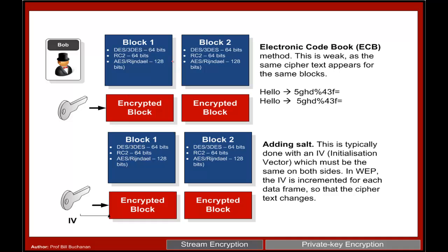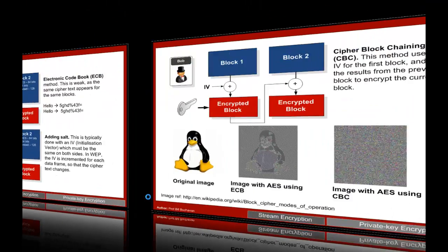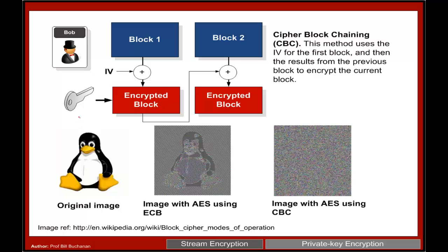In a standard electronic code book, we then encrypt each block with the key. The problem with that is that each block will always come out the same, so we often add SALT, and that involves an initialization vector. The initialization vector will make the encrypted blocks different. This shows a standard cipher block chaining or CBC — we have an initialization vector and we use that with the block and with the key to get our encrypted block, which is then chained into the next block and so on, so it will vary as we go along.